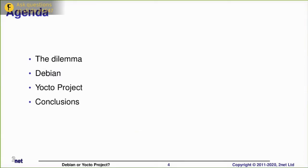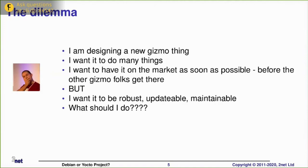I'll go through the pros and cons. I'll look at Debian first, then I'll look at Yocto, and then I'll try and draw some conclusions. I hope we have time for some questions at the end. If you have questions, please go ahead and ask them on the chat and I'll respond to them later.